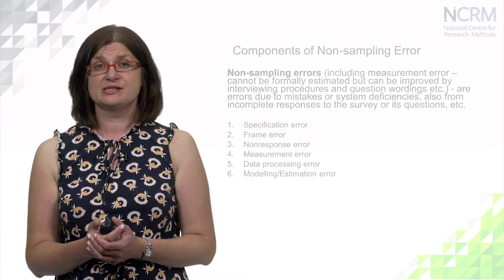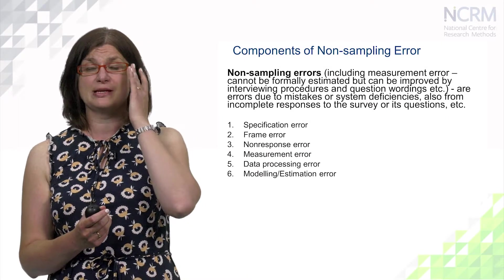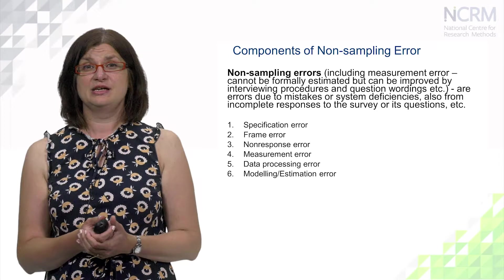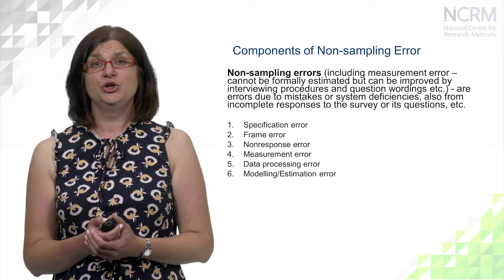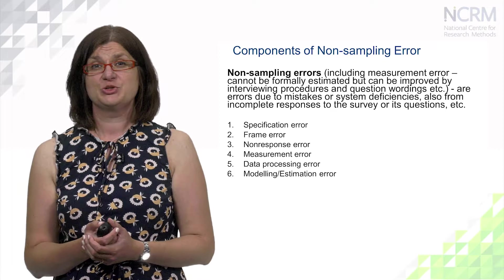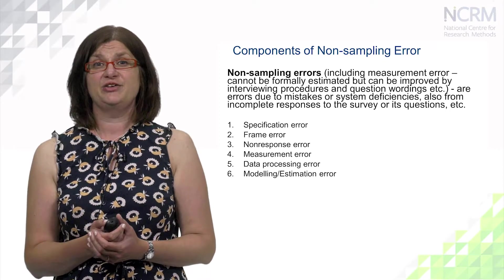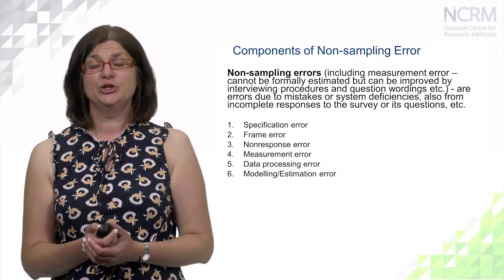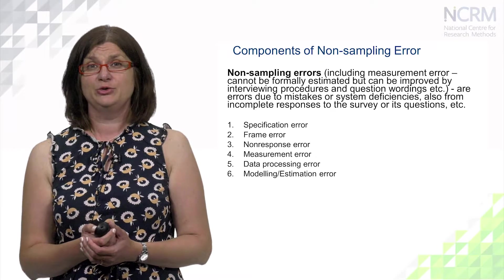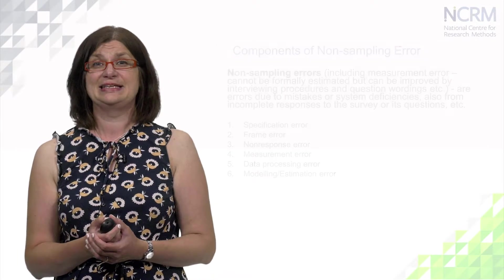Paul Biemer formulated the list of components of non-sampling errors. There are six main components: specification error, frame error, non-response error, measurement error, processing error, and modeling or estimation error. I'm now going to talk about each of these errors in detail.